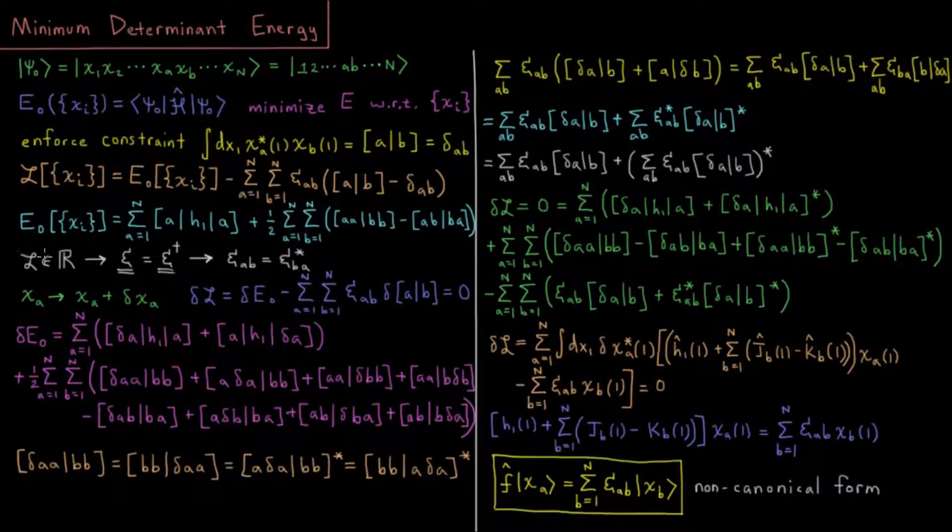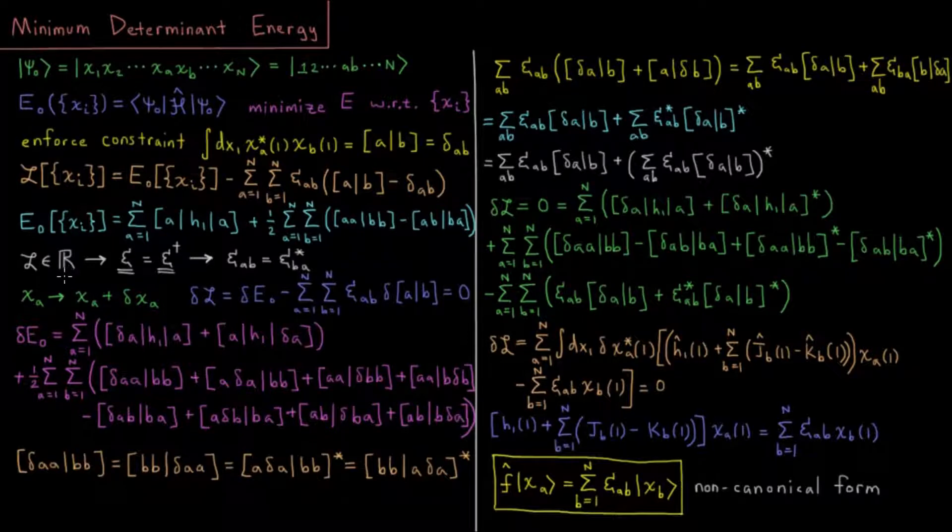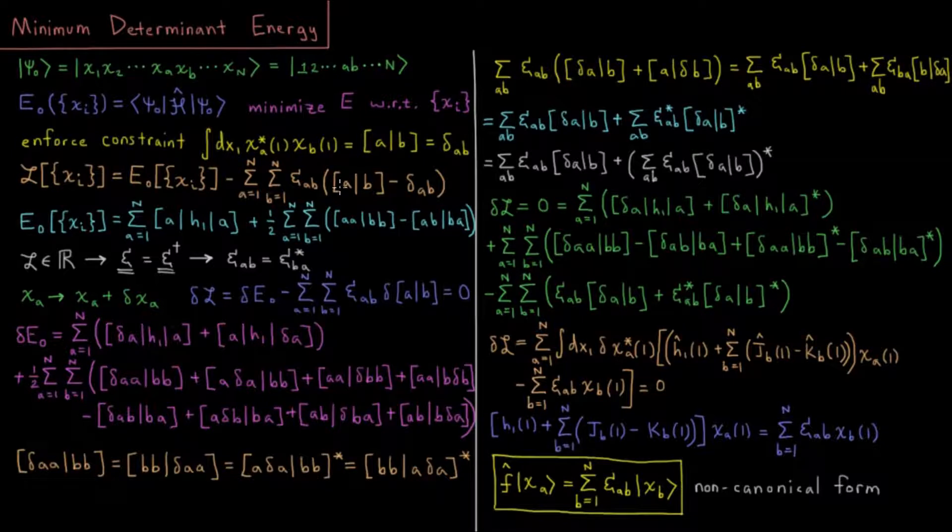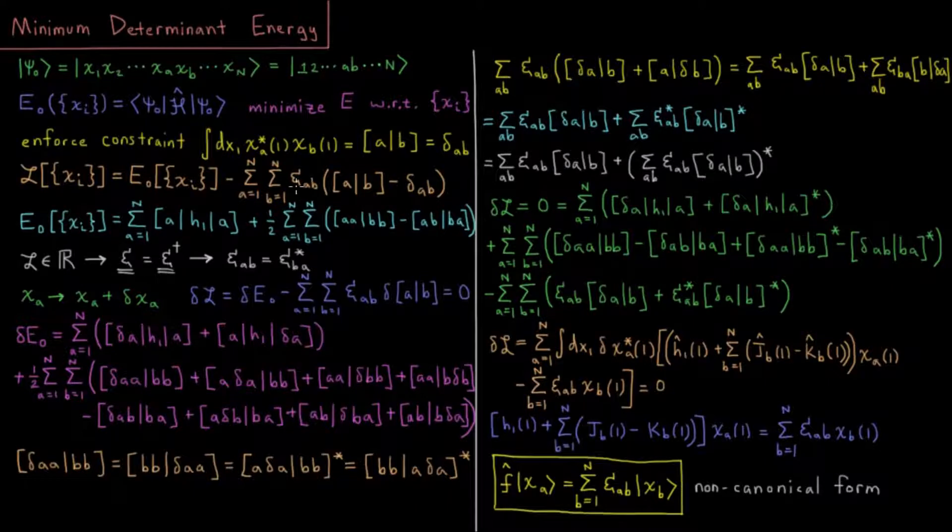Additionally, this Lagrangian is going to be real because our energy is a physical property, an observable, meaning it has to be a real number. It wouldn't make sense to have an imaginary energy or any other physical property. For this energy to be real and for the second term to be real as well, this matrix of Lagrange multipliers must be Hermitian, meaning if we take the transpose of the matrix, it equals the complex conjugate of the original, or epsilon ab equals epsilon ba star.